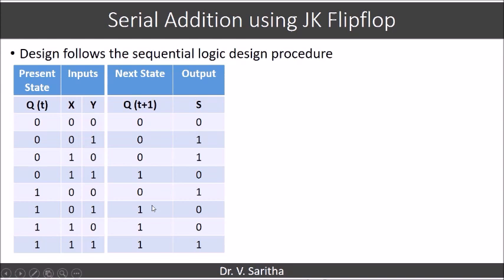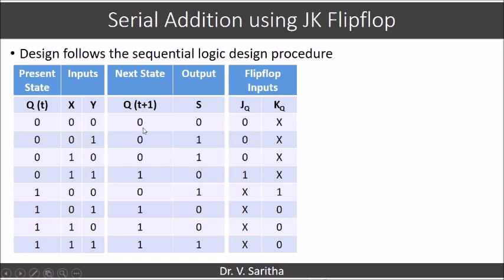What happens here? So 0, 0, 0 we are taking. This is nothing but the truth table for your full adder. So this is XY and this is your input carry. This is output carry and S. So if you see, we will take Q of T and Q of T plus 1 and obtain the values of JQ and KQ using the JK excitation table.